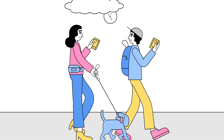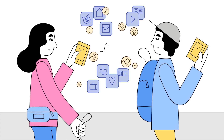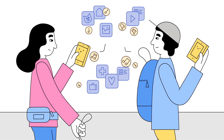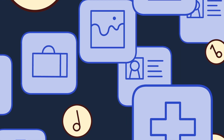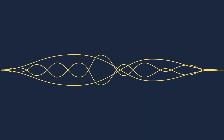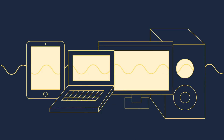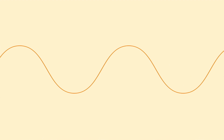Chirp sends and receives data using sound, with nothing but a device's existing speaker and microphone. Information is converted to an audio signal, heard by nearby devices and then converted back to the original data.